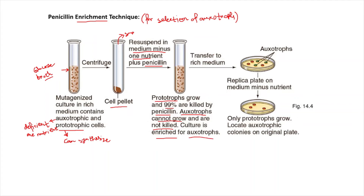After this, we transfer the cells to a new medium and plate them on agar. This new medium contains all the necessary nutrients required for the growth of the auxotrophic mutants, so auxotrophs can easily grow here. Some prototrophs will also grow because they already have the necessary nutrients for growth and do not need any supplementation. The 1% of prototrophs not killed by penicillin will also grow in this new medium.